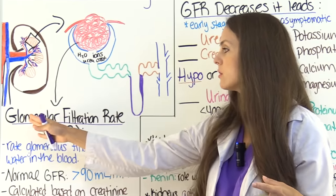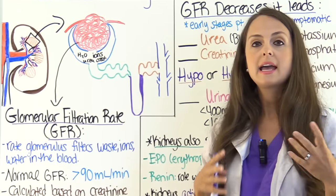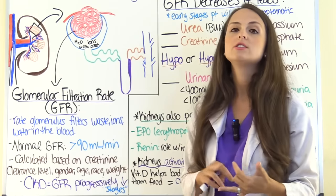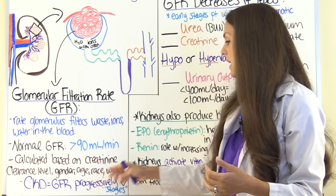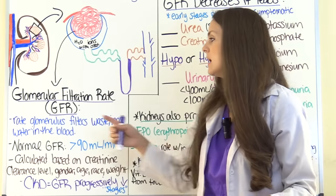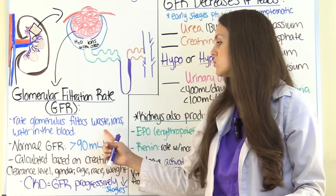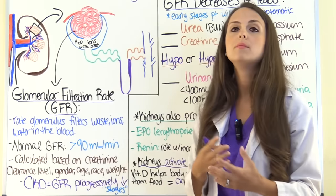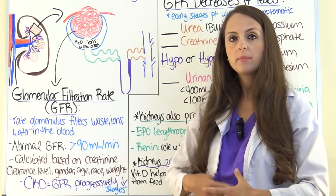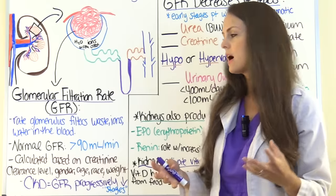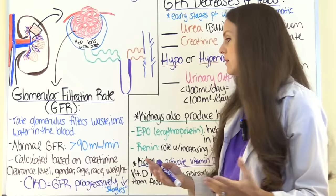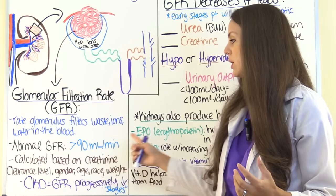When we measure the glomerular filtration rate, we take into account things such as creatinine clearance level, the patient's gender, age, race, and weight. The GFR specifically is the rate that the glomerulus filters waste, ions, and water in the blood — it tells us how well the kidneys are performing in helping the body maintain homeostasis. A normal GFR is greater than 90 milliliters per minute.